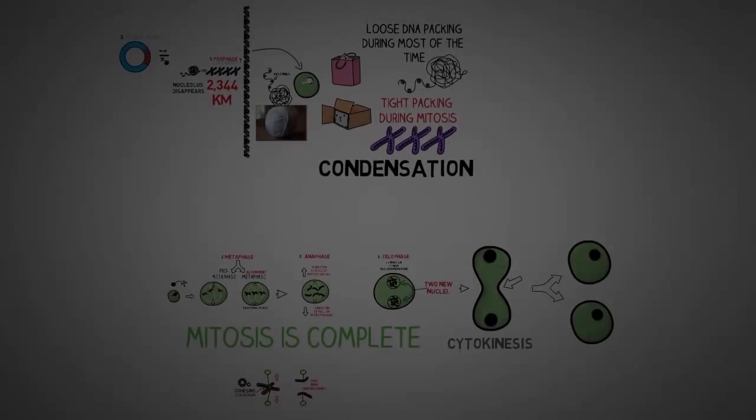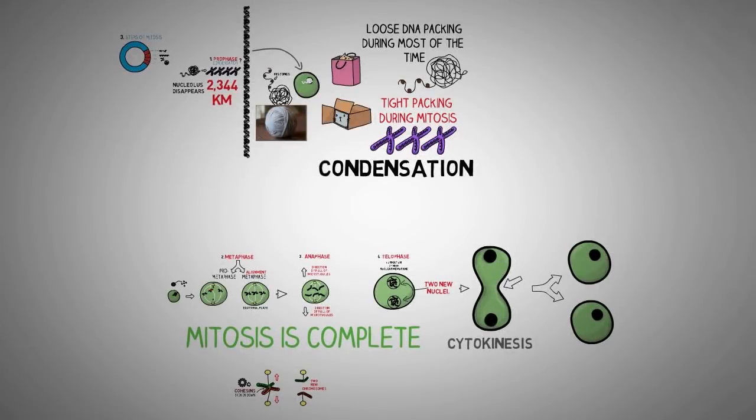With this, the cell cycle is completed and when required, these two daughter cells undergo this whole cell cycle again to make more new cells.